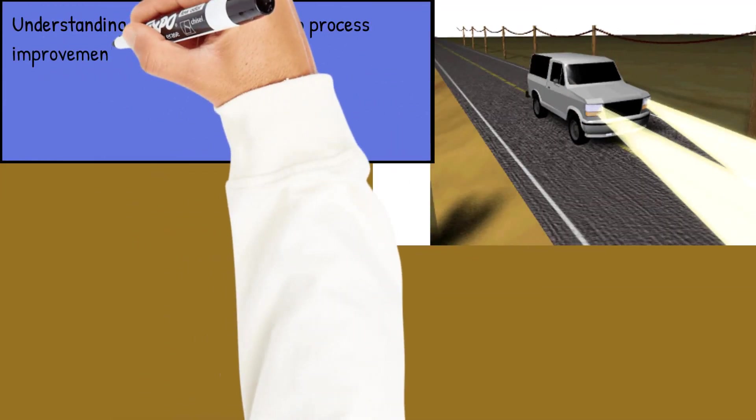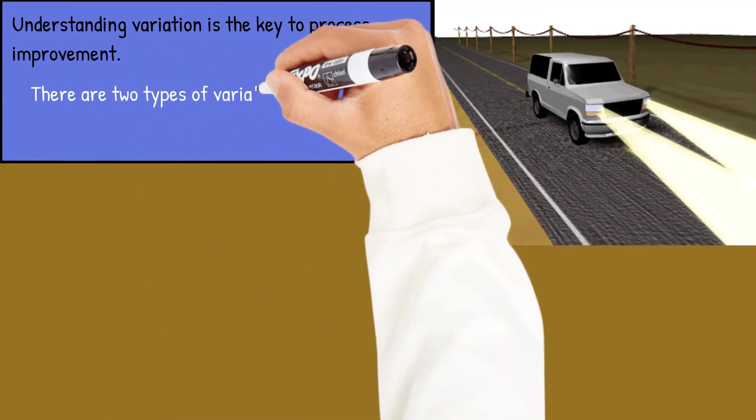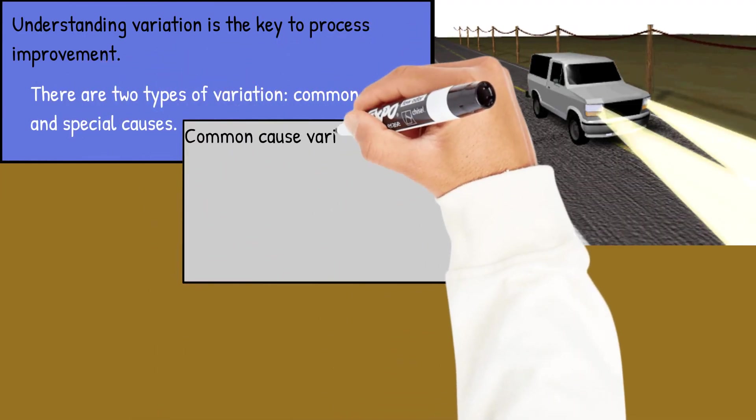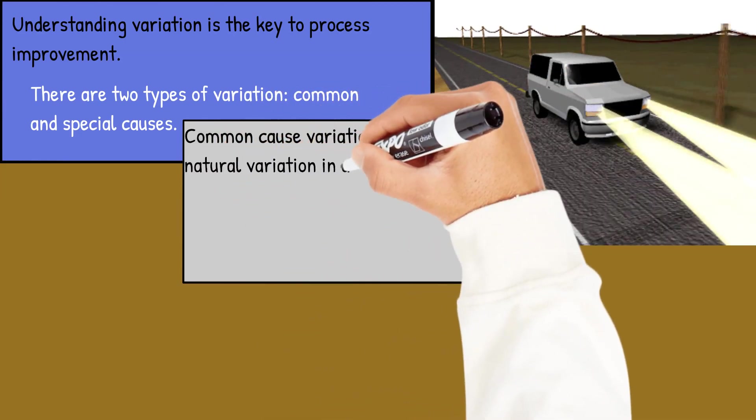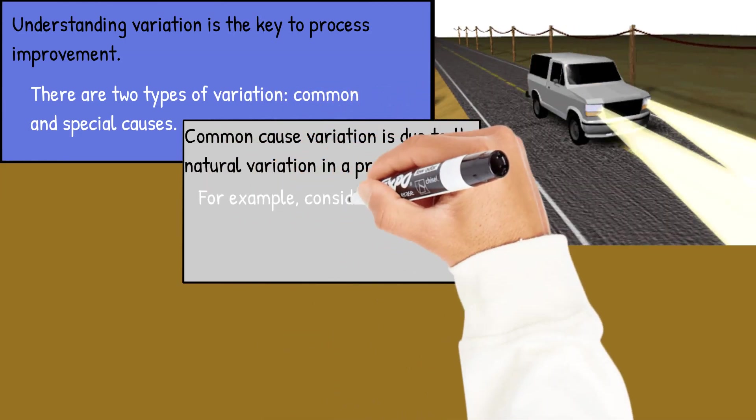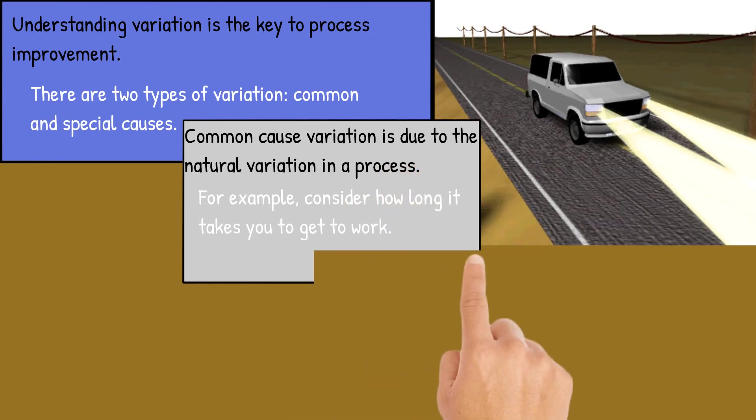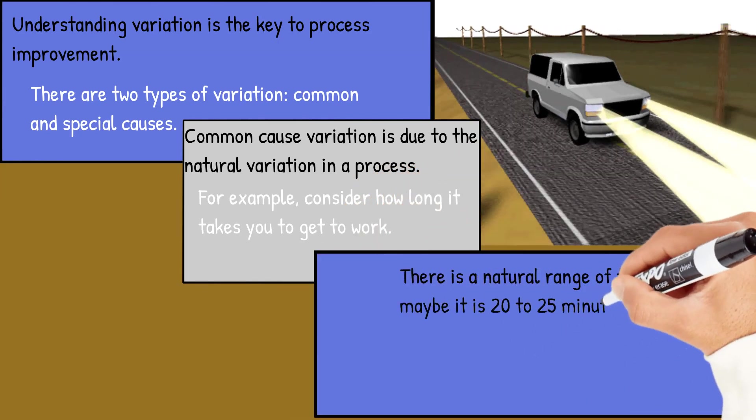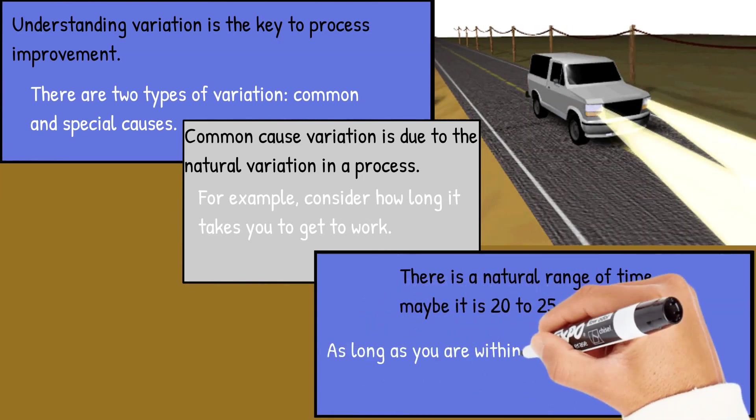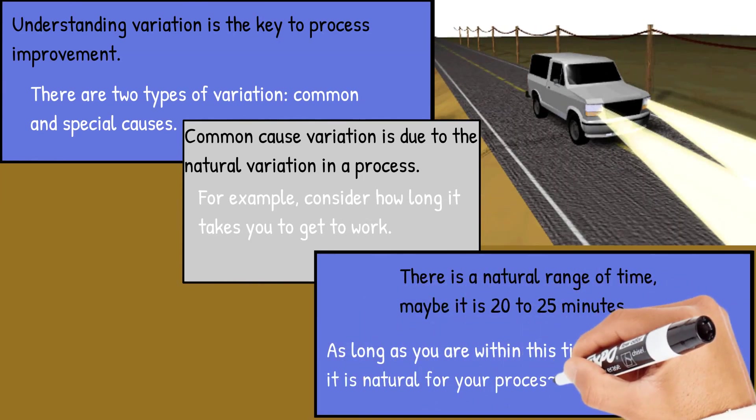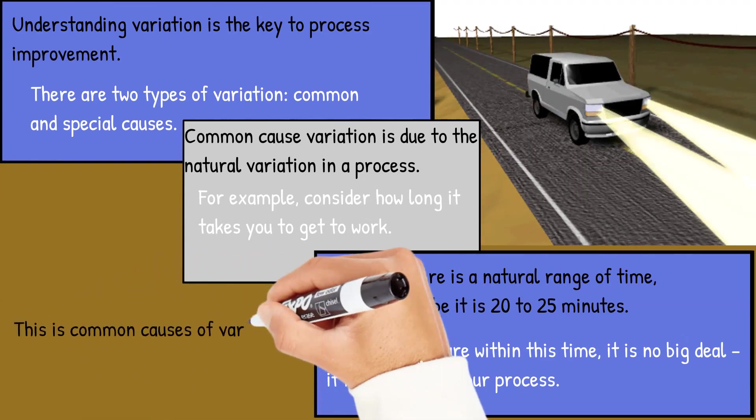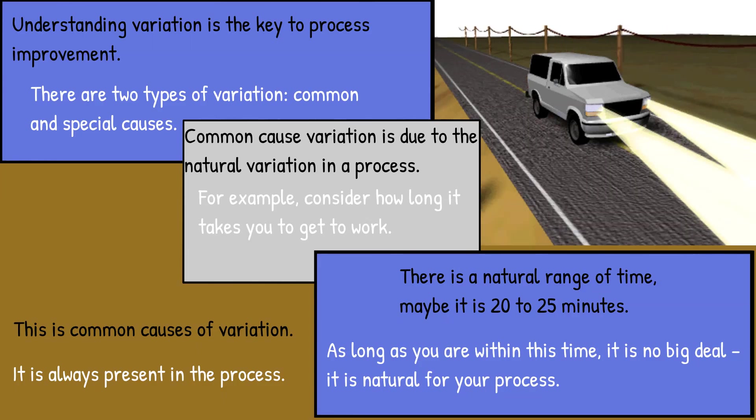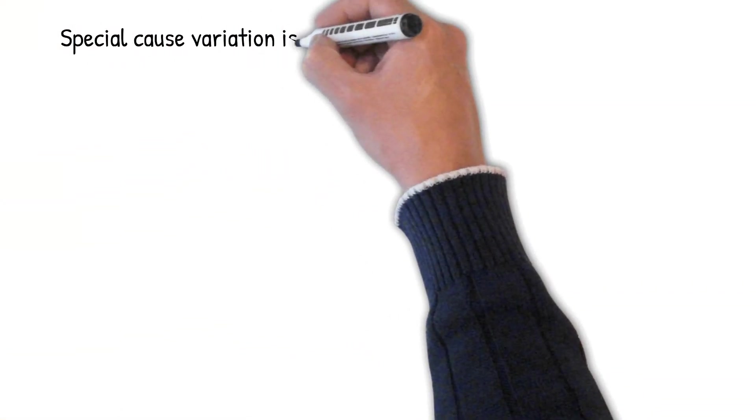So understanding variation is the key to process improvement. There are two types of variation, common and special causes. They have nothing to do with specifications. Common cause of variation is due to natural variation in the process. For example, consider how long it takes you to get to work. There's a natural range of time, and maybe that's 20 to 25 minutes. As long as you're within that range, it's no big deal to you. It's part of the normal variation in your process. It's natural. That's what we call common cause of variation. It is present in any process and all processes.